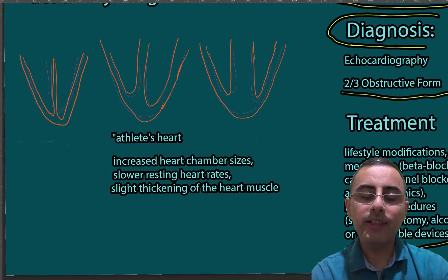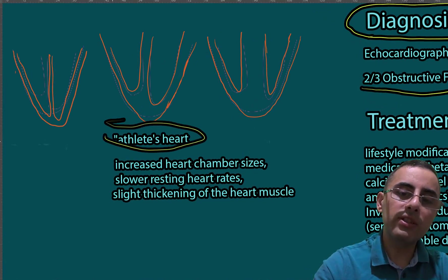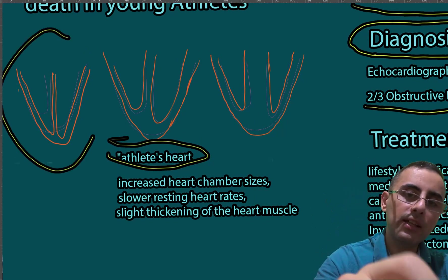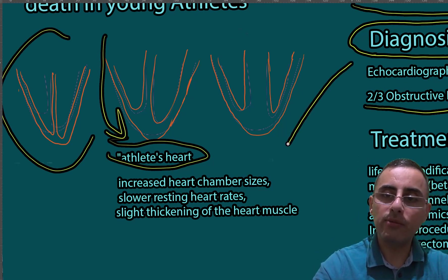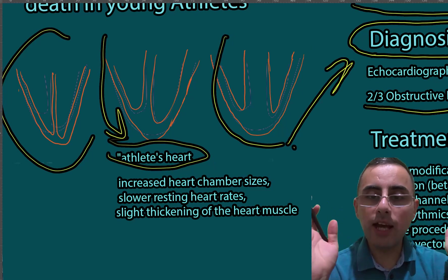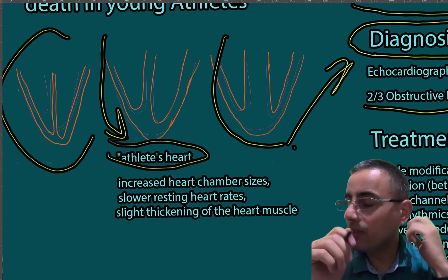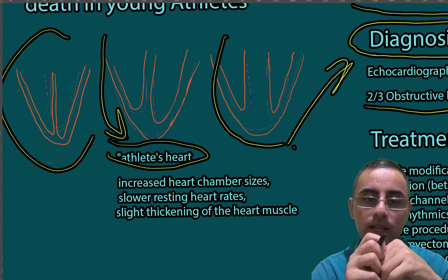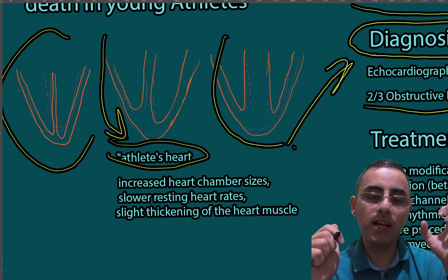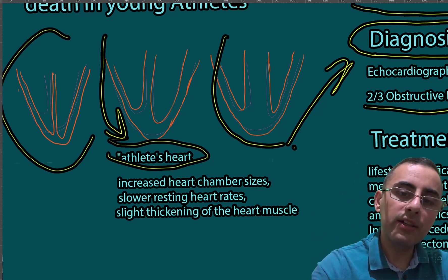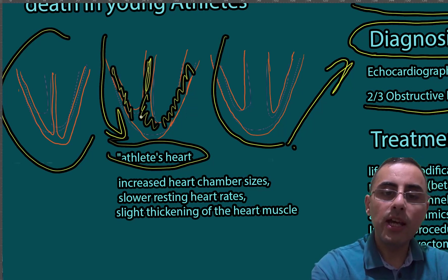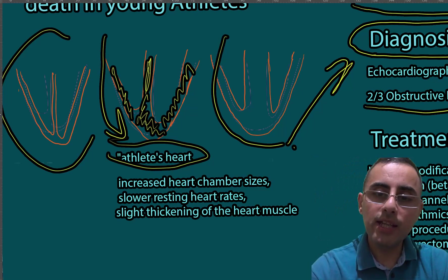Athlete's heart usually looks similar to hypertrophic cardiomyopathy, so it's important to understand the difference. When a healthy person exercises intensively, the heart becomes bigger and stronger, the heart rate becomes slower but more powerful, and the walls become slightly thickened. This is called athlete's heart, and it is an adaptive, non-pathological, healthy response.